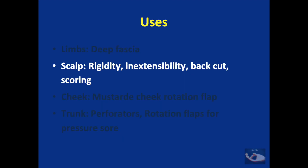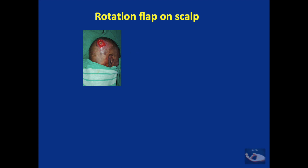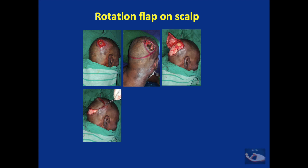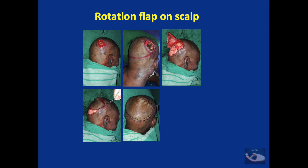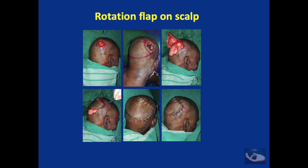When planning a rotation flap on the scalp, the rigidity and inextensibility of scalp skin must be considered. The use of a back cut and scoring the galea are also important techniques for scalp defects. For an electrical burn defect on the scalp, triangulation was done, the rotation flap was marked and raised, and the flap was rotated to cover the defect with flap inset completed. The advantage of the rotation flap on the scalp is that there is no alopecia as a secondary defect, unlike with a transposition flap.